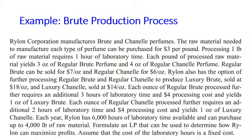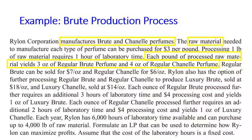Now let's take a look at an example. Ryland Corporation manufactures perfumes and they have two types: Brut and Chanel. These perfumes come from raw material — you process the raw material and you get what they call regular perfumes: regular Brut and regular Chanel. So these regular perfumes come from processing the raw material.